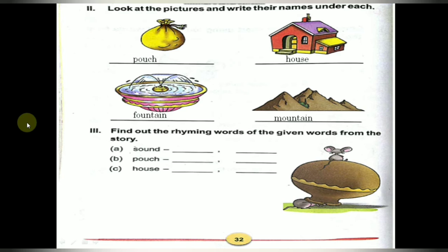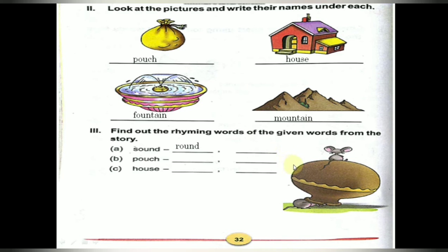Now third: Find out the rhyming words of the given words from the story. Do you know rhyming words? From the story we can find some rhyming words. First word: sound — S-O-U-N-D. What word from the story rhymes with sound? Round. One more rhyming word — ground, G-R-O-U-N-D. See — sound, round, ground — all end in N-D.